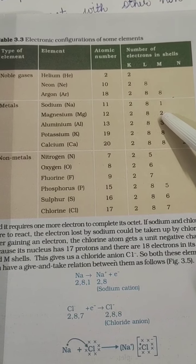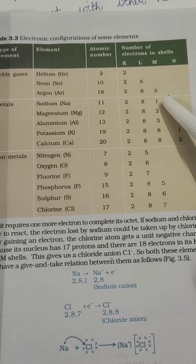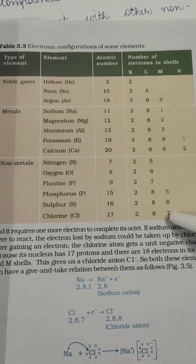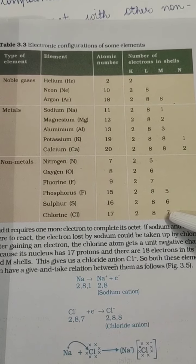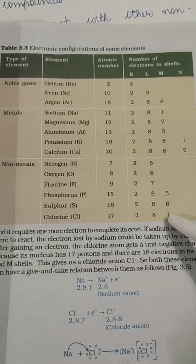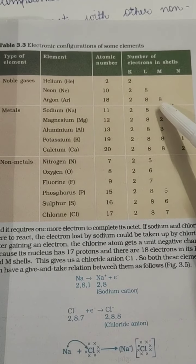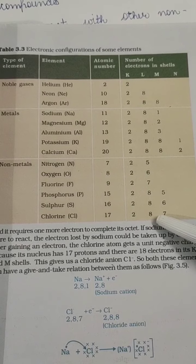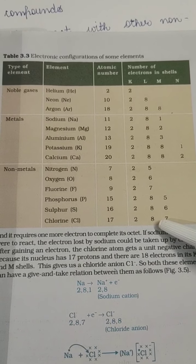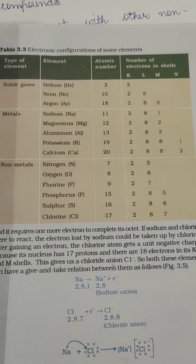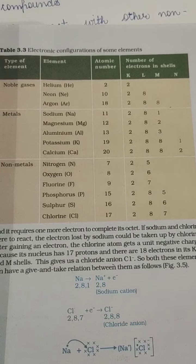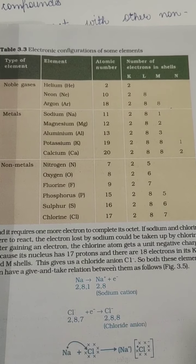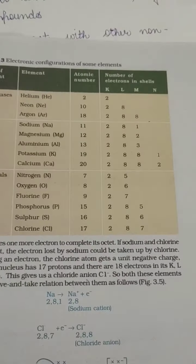We can see that sodium has 1 electron extra and chlorine has 1 electron less. So sodium will give 1 electron to chlorine - there will be transfer of electrons. When there is transfer of electrons, they are called as ionic bond. This is what we are going to study in this chapter.